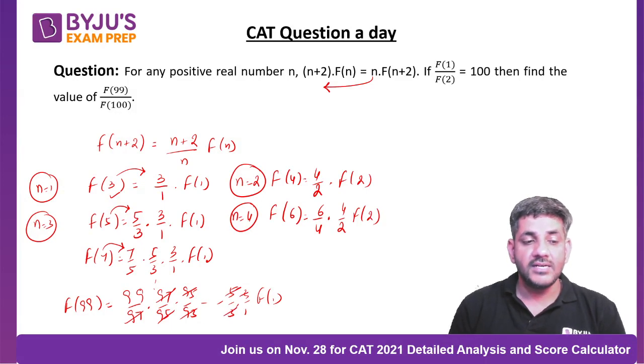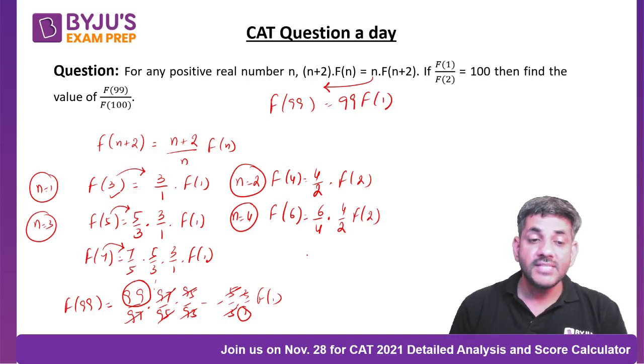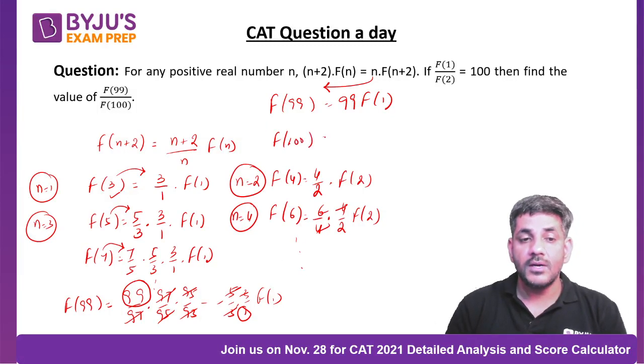They will keep cancelling out and I see ultimately it would be only 99/1 times f(1). So what am I getting? f(99) is 99/1 times f(1). By the same logic, if I do here as well, can I say they will also keep cancelling out and f(100) would be equal to 100/2 times f(2).